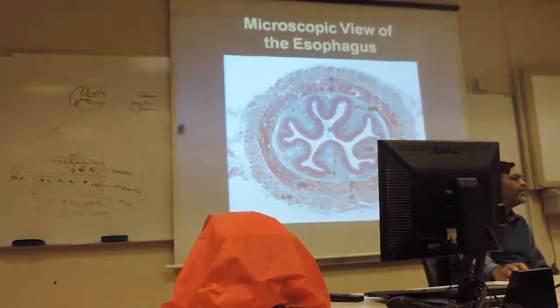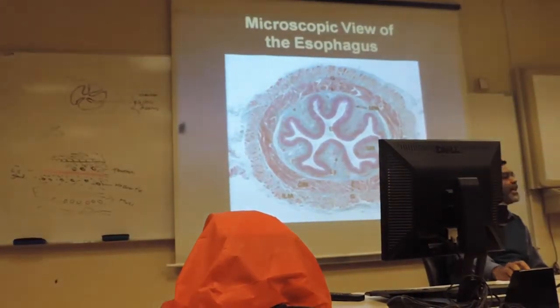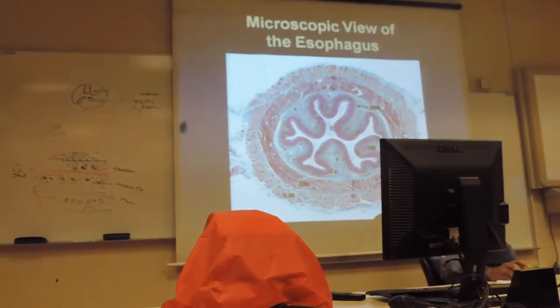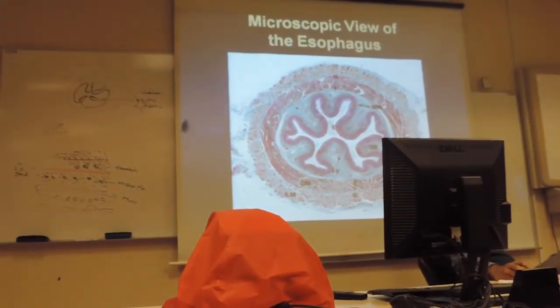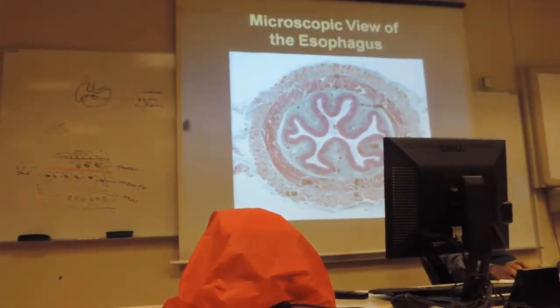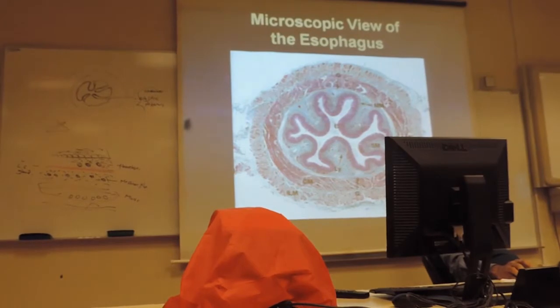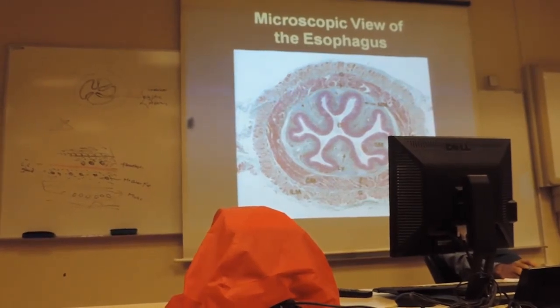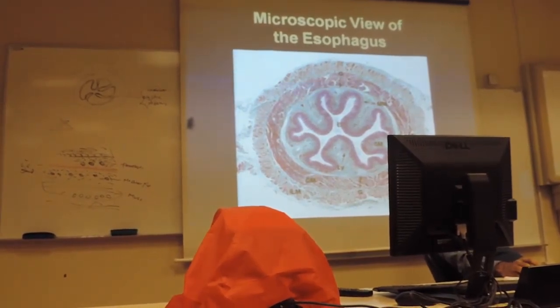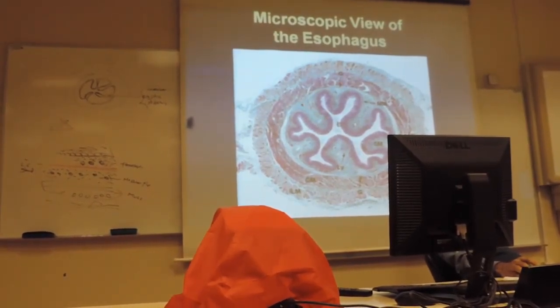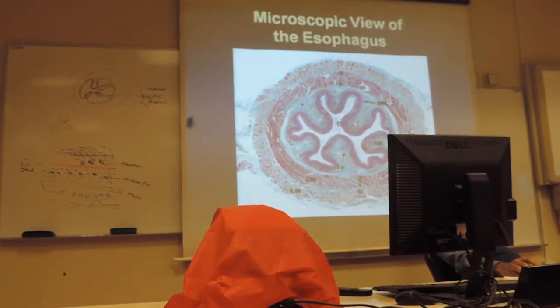Here is another image of the esophagus. Now here it shows a very clear picture. You can see this bluish color — that is all connective tissue. So this bluish area represents connective tissue.